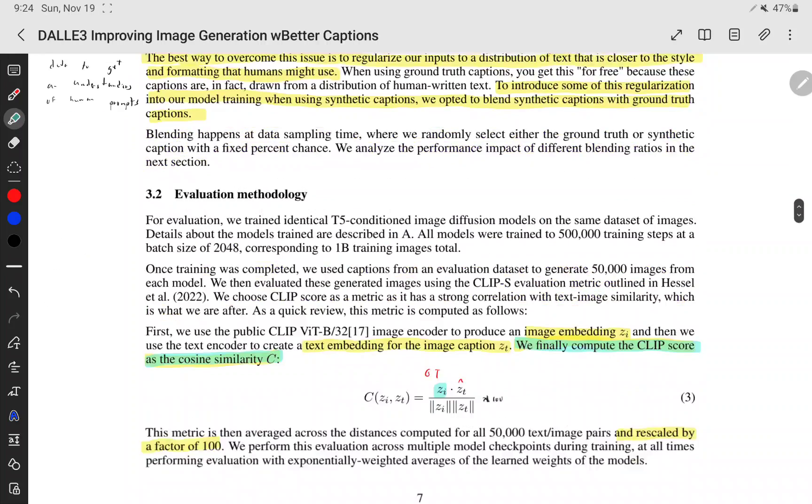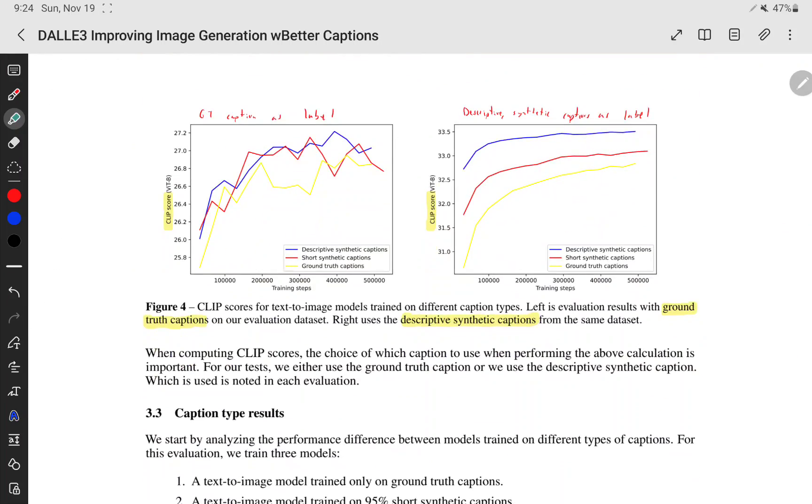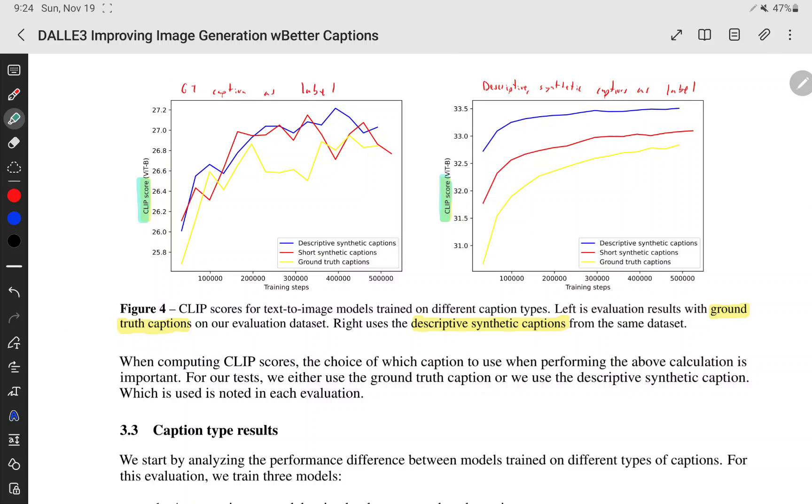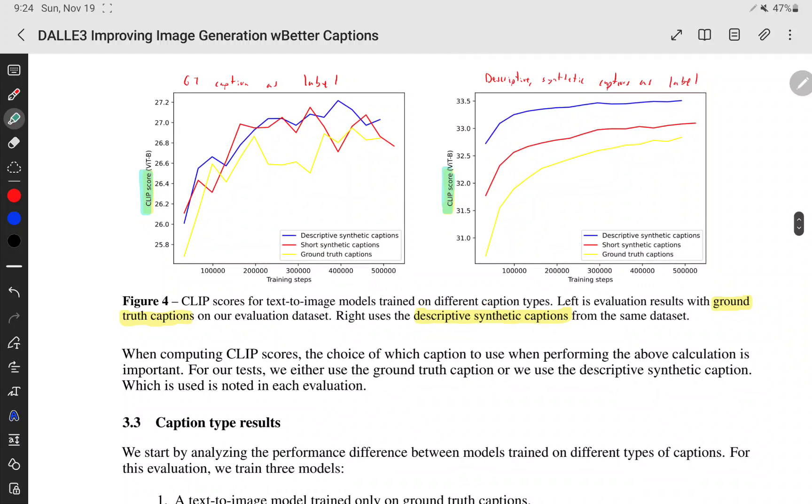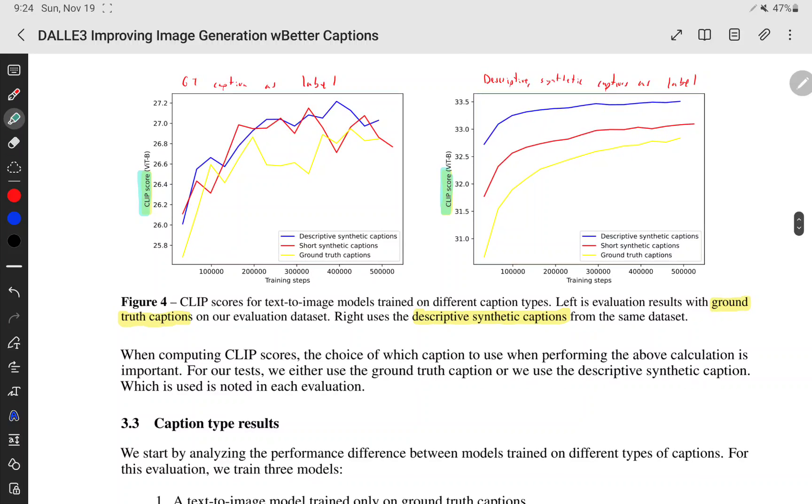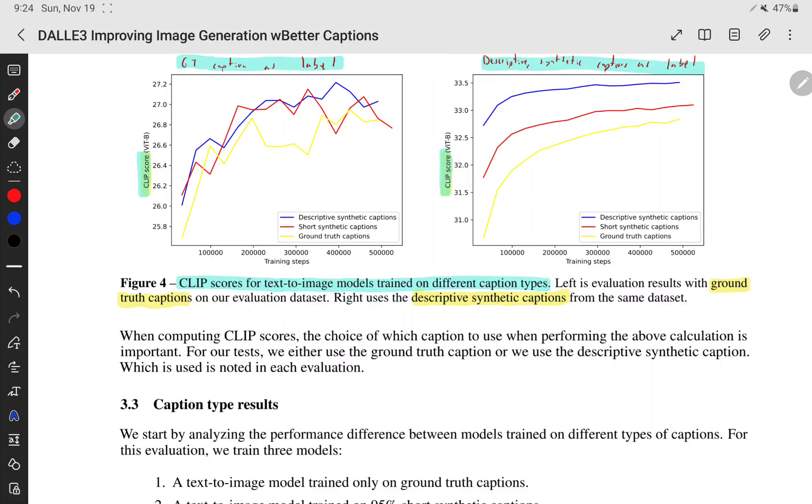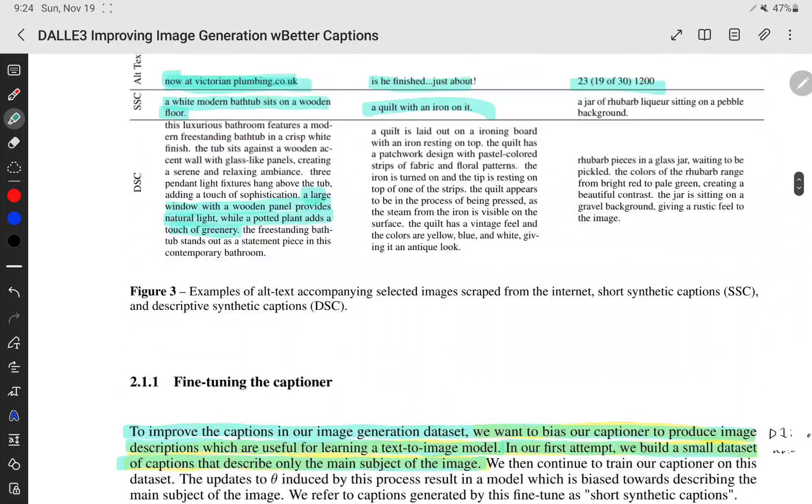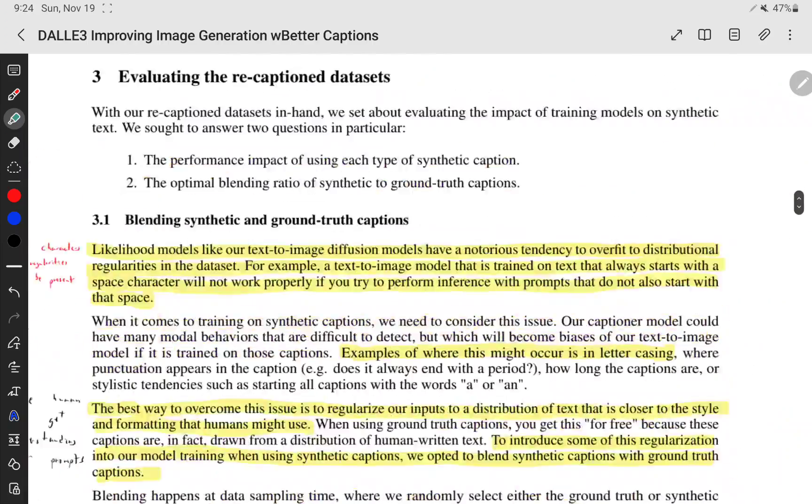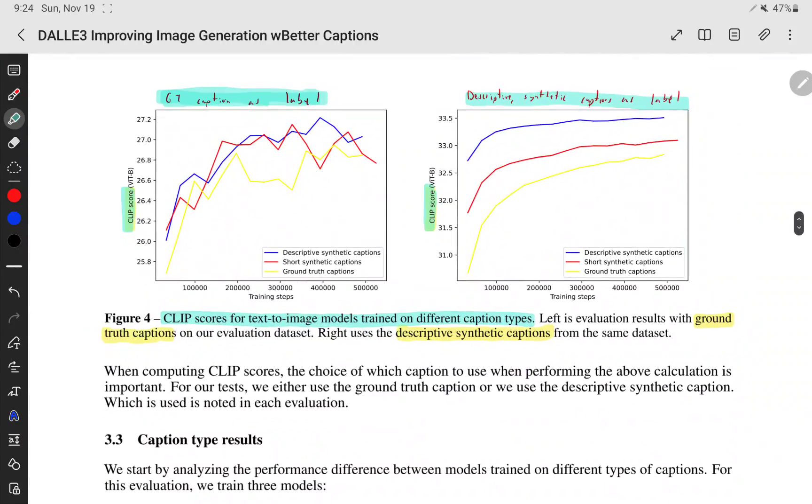These are the two caption styles they have: short and super long. And if we look down here, you can see CLIP score. Higher is better because that means that the similarity of the image and the text, the generated text, are better or is closer. Now, if we look here, there's these two plots. So, this is the ground truth caption as the label. And this is the synthetic caption as the label. And these are the CLIP scores for the text-to-image models trained on different caption types. This is the ground truth one. And you can see the ground truth one would be like this here. And the generated ones would be these. The right graph would be the generated ones as the label. Yeah. It's a lot more noisy with the ground truth captions. But with the synthetic captions as the label, it's a lot better.